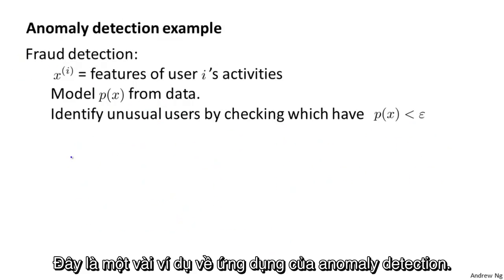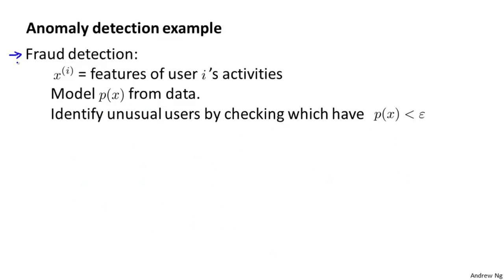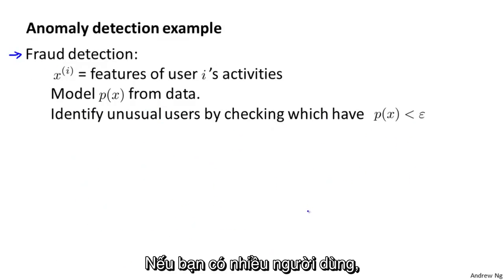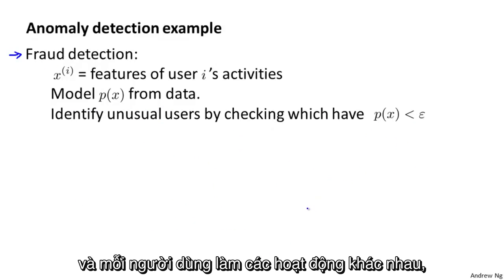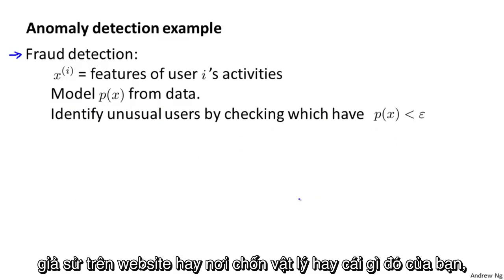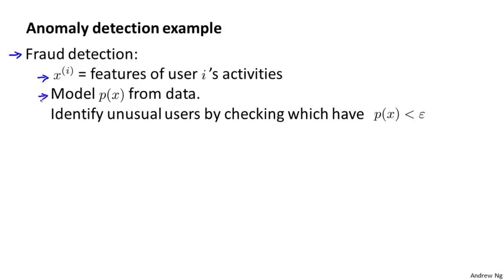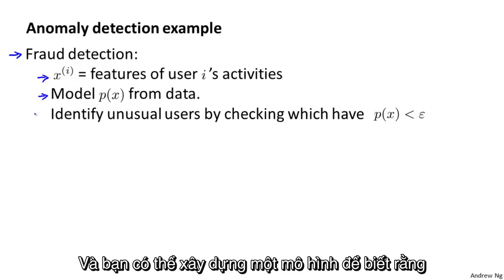Here are some examples of applications of anomaly detection. Perhaps the most common application of anomaly detection is actually fraud detection. If you have many users and if each of your users take different activities, you can compute features XI of the different user's activities.